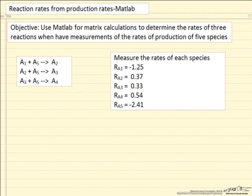In this example I will demonstrate how we can use MATLAB for matrix calculations to determine the rates of three reactions when we have the measurements of rates of production of five species.